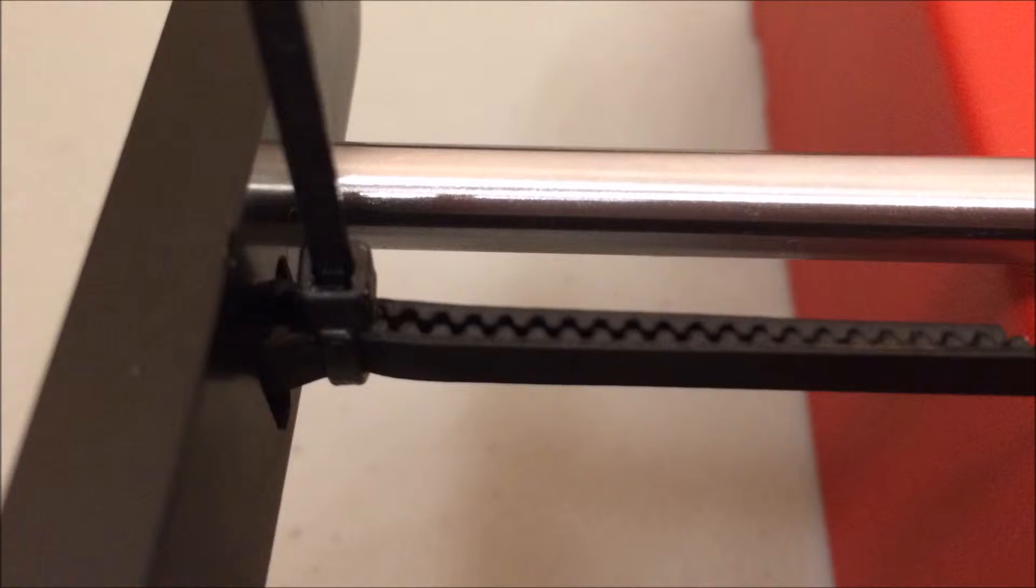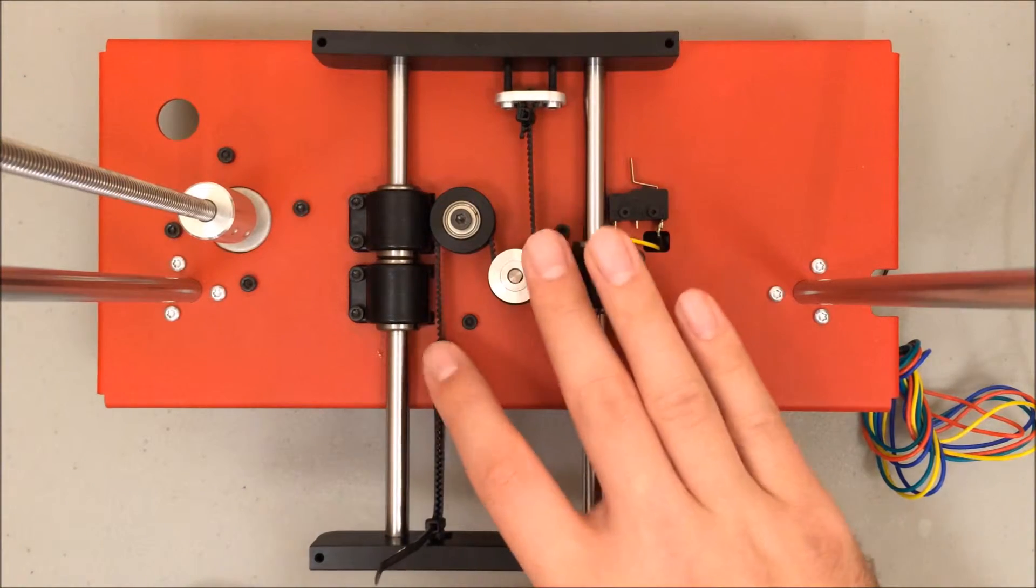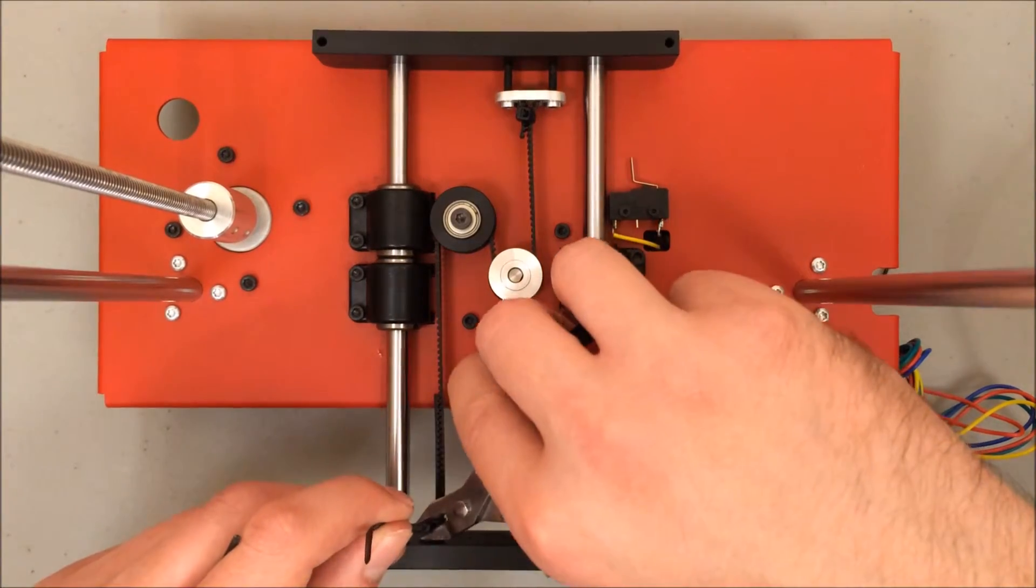This is a tough piece to tighten, so you may need to use a set of pliers. So even though I haven't tightened the tensioner, this is actually a pretty tight belt, so I feel pretty good about the zip tie, so I'm going to clip away the excess.